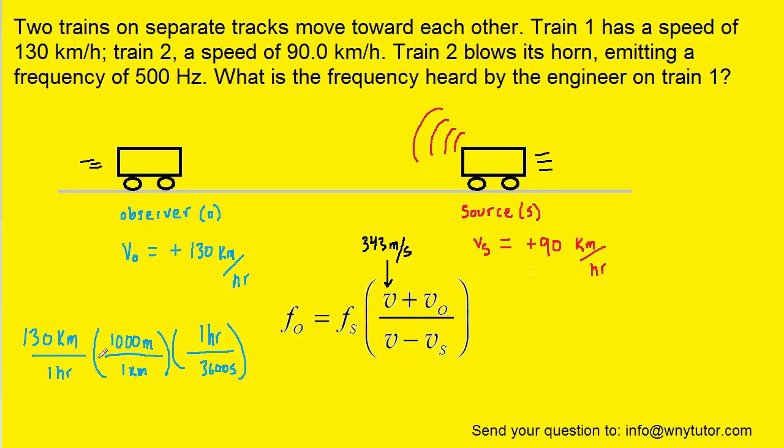We'll show the conversion for one of those speeds. We know that one kilometer has a thousand meters, and if we set up the conversion this way, the kilometers will cancel. And then similarly, one hour is 3600 seconds, and this way the hours will cancel. And this works out to approximately 36.1 meters per second.